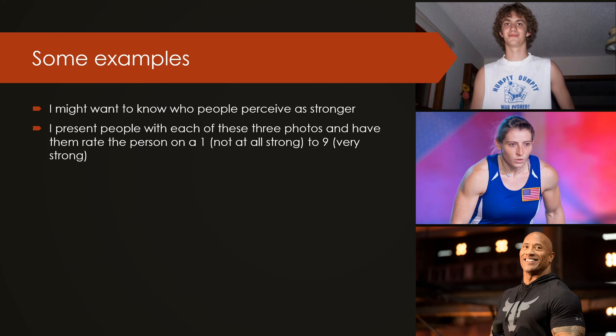Some examples of a one-way ANOVA: let's say I want to know who people perceive as stronger. This is a picture of me in middle school, we've got Barclay Stockett — she's an American Ninja Warrior, she's awesome in every way, shape, and form — and then we've got The Rock. I might present people with each of these three photos and have them rate the person on a one to nine scale, from not at all strong to very strong.